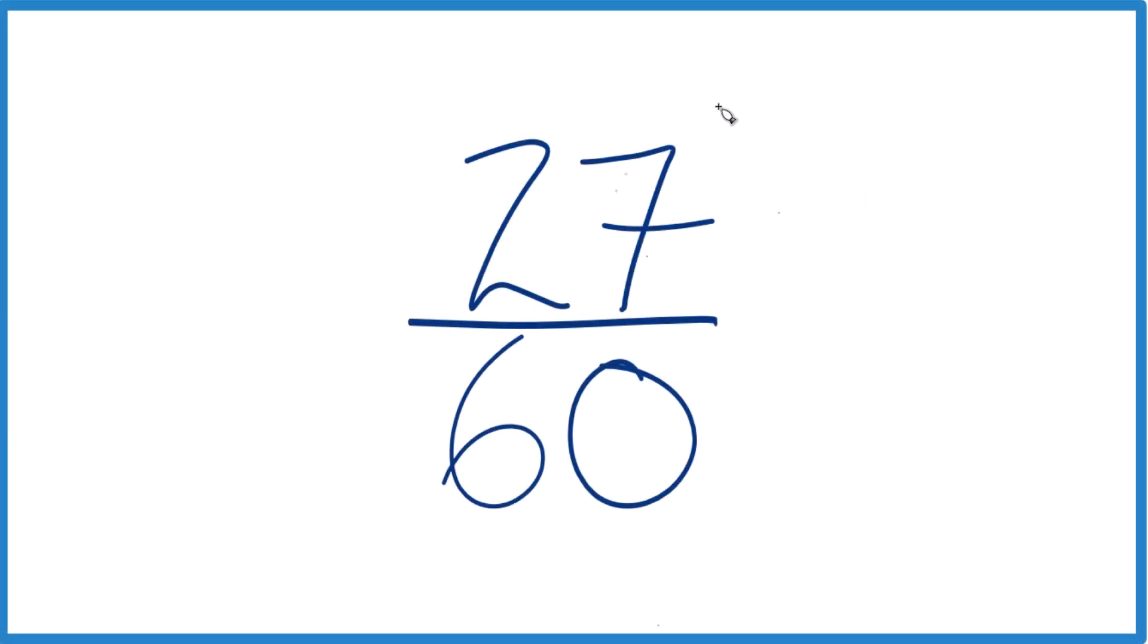So let's simplify this fraction. We have 27 60ths here. So how do we simplify the fraction 27 60ths?